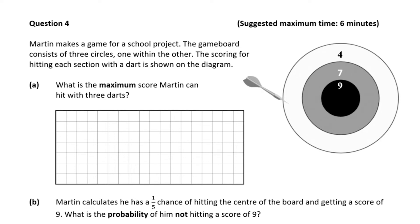This question is worth 15 marks in total. We're told that Martin makes a game for a school project and the game board consists of three circles, one within the other. The scoring for hitting each section with a dart is shown on the diagram.